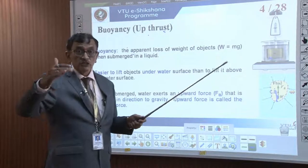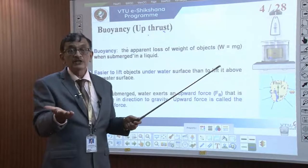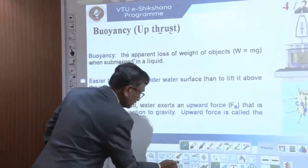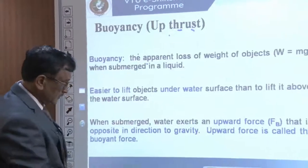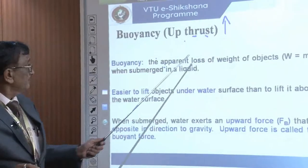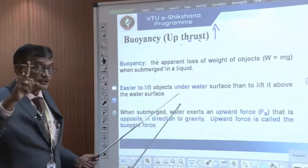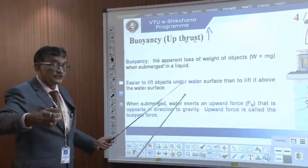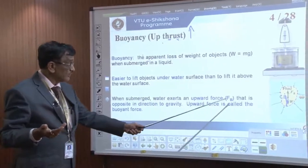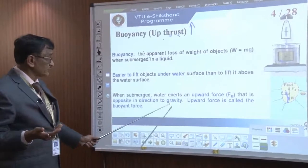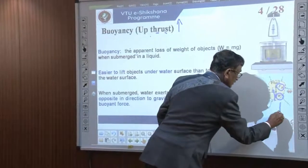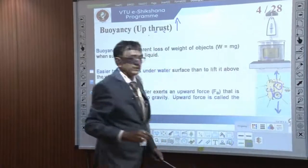Whenever we put any piece in water, either it will submerge fully, float halfway, or hang in between — three possibilities. Buoyancy is the up thrust. It is easier to lift a body when it is under water because up thrust is already acting on it. When submerged, water exerts an upward force F_b opposite in direction to gravity.